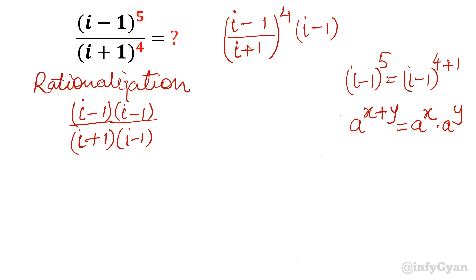Now you can see, I just multiplied numerator and denominator by (i-1). So let me find this value first. (i-1)^2 over (i+1)(i-1). Using (a+b)(a-b) equals a^2 minus b^2, we get i^2 minus 1.